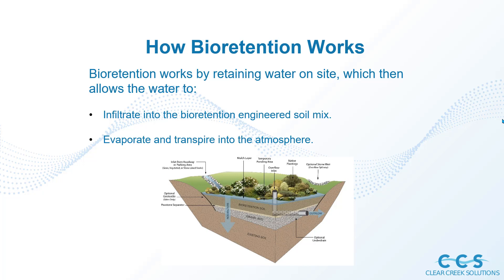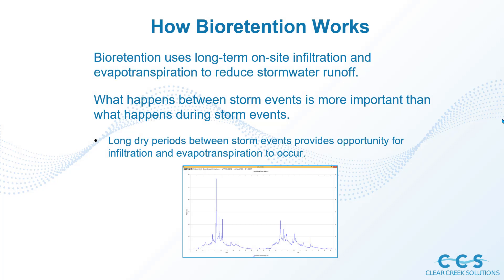Bioretention works by retaining water on site, which then allows the water to infiltrate into the bioretention engineered soil mix, or evaporate and transpire into the atmosphere. Some of that water will evaporate or continue to infiltrate through the specified engineered soil mix. In WWHM 2012 you can specify what soil is used, the infiltration rate, how thick those layers are, and the model will estimate how much water can safely infiltrate into the ground — which is a very key capability.